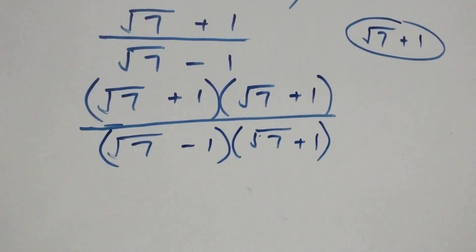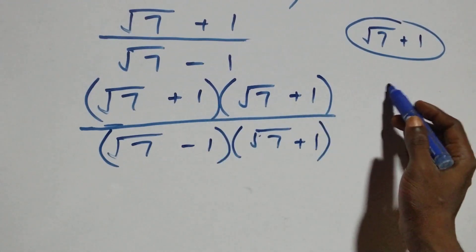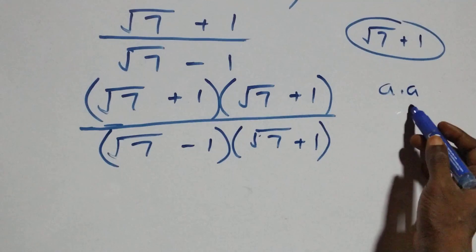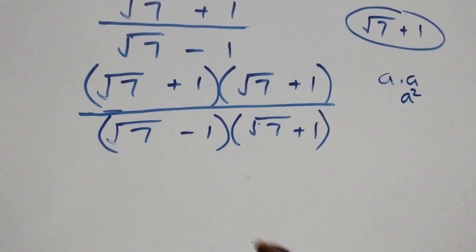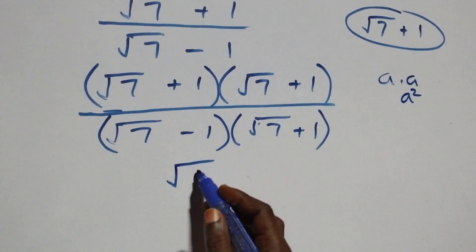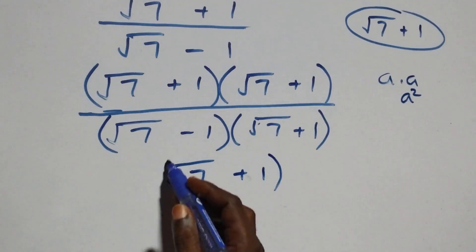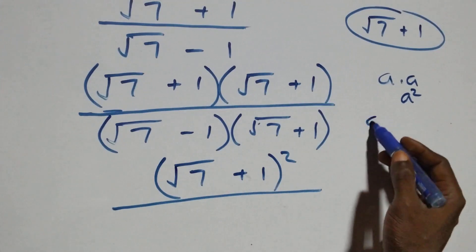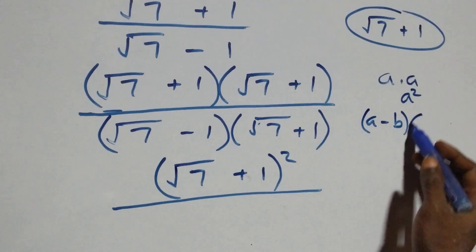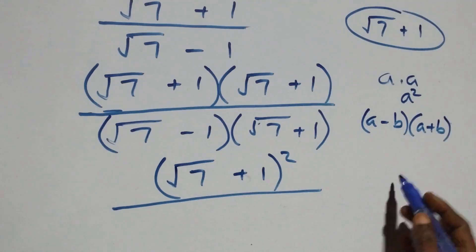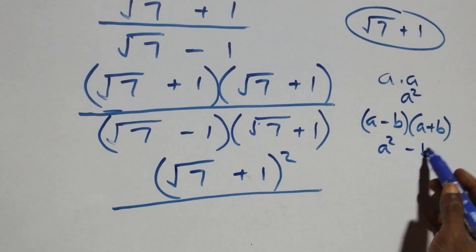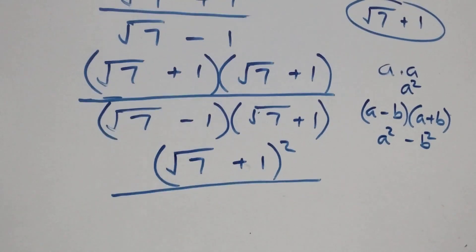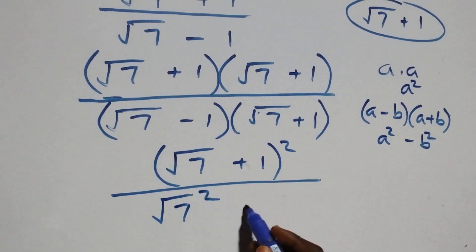When we have the same thing multiplied by itself, a times a, that is a squared. So the numerator becomes (√7 + 1) squared. For the denominator, we have (a − b)(a + b), which equals a² − b², the difference of two squares. So the denominator is (√7)² − 1², which gives 7 − 1.